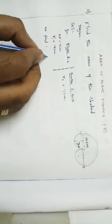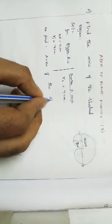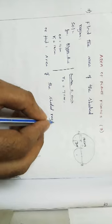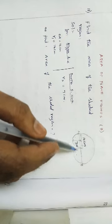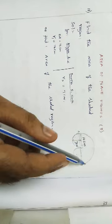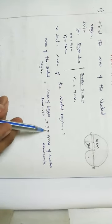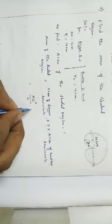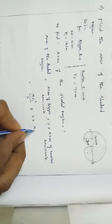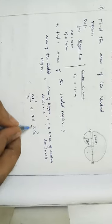Now, area of the shaded region = area of bigger semicircle + two times the area of smaller semicircle. So area of shaded region = (πR1²/2) + 2 × (πR2²/2). The two in the numerator and denominator cancel since the sum of two semicircles equals one circle.